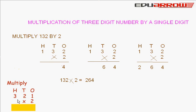Multiply 321 by 2. First, we multiply the ones: 2 times 1 is 2. We write here 2. Now, we multiply the tens: 2 times 2 is 4. We write here 4. Now, we multiply the hundreds: 2 times 3 is 6. We write here 6. So, the product is 642.